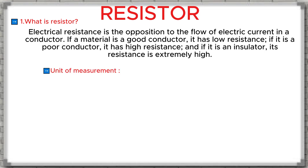The unit of measurement for resistance is the ohm, represented by the Greek letter omega. In terms of construction, resistors are usually made from materials that do not conduct electricity well, such as metal alloys or carbon, and they are coated with an insulating layer.